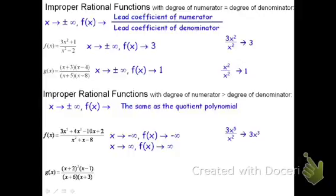Now let's take a look at the next one. If I multiplied this out, the x plus 2 quantity cubed would produce an x cubed piece, and multiplying by another x on top gives x to the 4th. On the bottom, when we multiply, we'd get x squared. So if we have x to the 4th over x squared, it reduces down to x squared. The end behavior of the original function g of x is going to be the same as an x squared function. This is an even degree, so both ends go the same direction. Because it's a positive x squared, they both go up — as x goes to either positive or negative infinity, f of x goes to positive infinity.